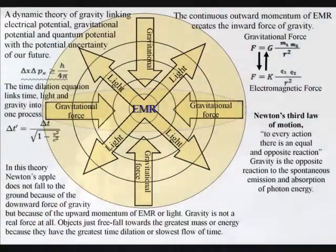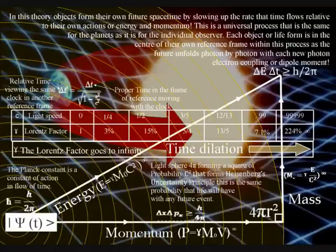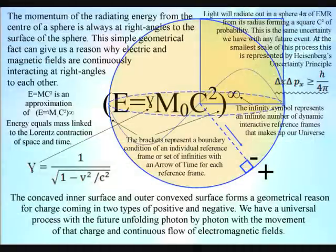In this theory this is because the time dilation formed by the sun is spherical, therefore a planet in circular orbit will not encounter a gravitational difference that is formed by a geometrical process that is relative to time dilation. The momentum of the radiating energy from the center of a sphere is always at right angles to the surface of the sphere. This simple geometrical fact can give us a reason why electric and magnetic fields are continuously interacting at right angles to each other with a concave inner surface and outer convex surface forming a geometrical reason for charge coming in two types, positive and negative.